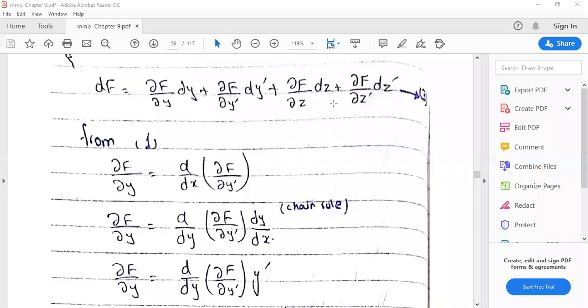So write the differential form of f which is partial f over partial y dy plus partial f over partial y prime dy prime plus partial f over partial z dz plus partial f over partial z prime dz prime.